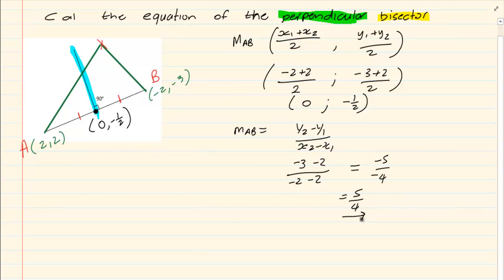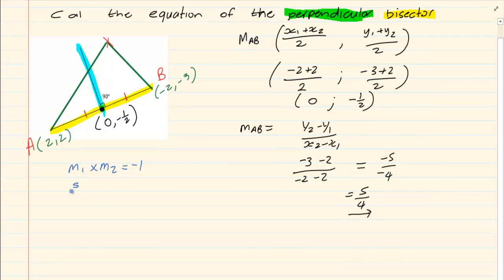Now if we know that the gradient of AB is 5 over 4 and we know that it is perpendicular then we know that m1 times m2 is equal to negative 1. So we have got 5 over 4 times m2 is equal to negative 1. That would mean m2 is equal to negative 4 over 5.